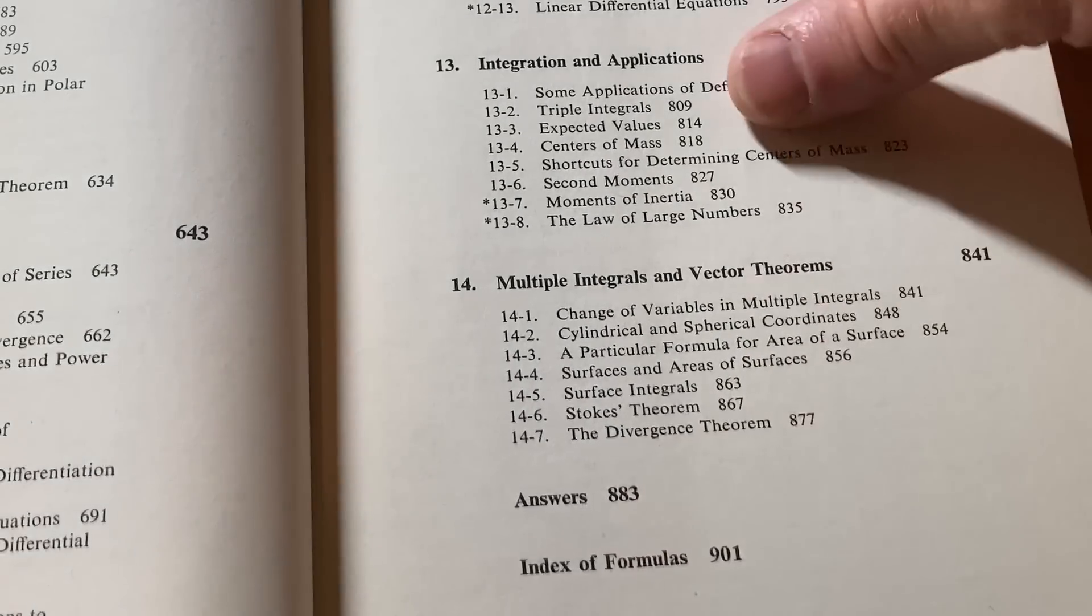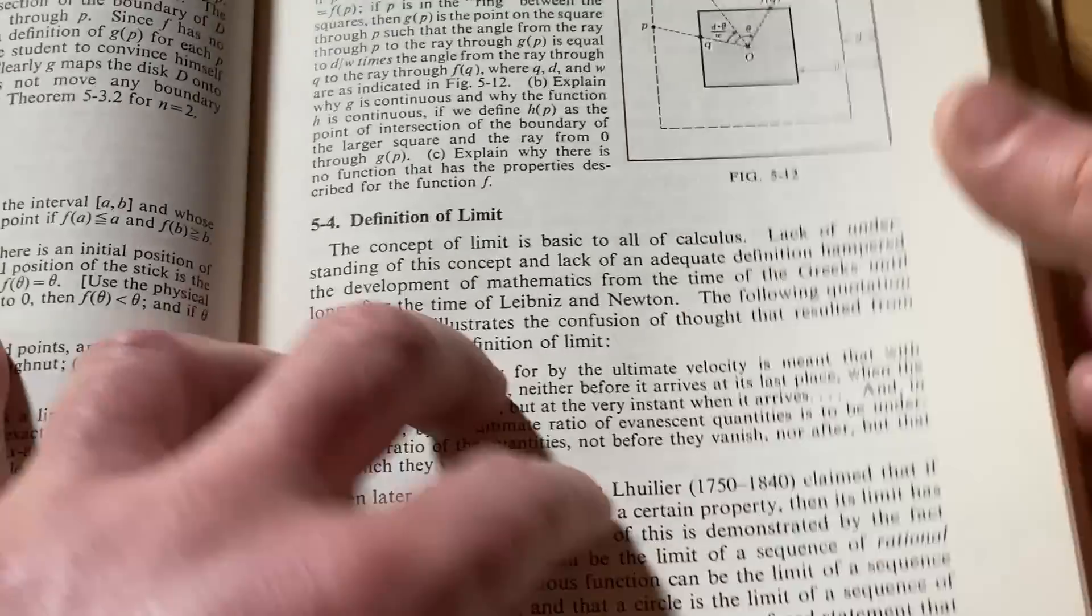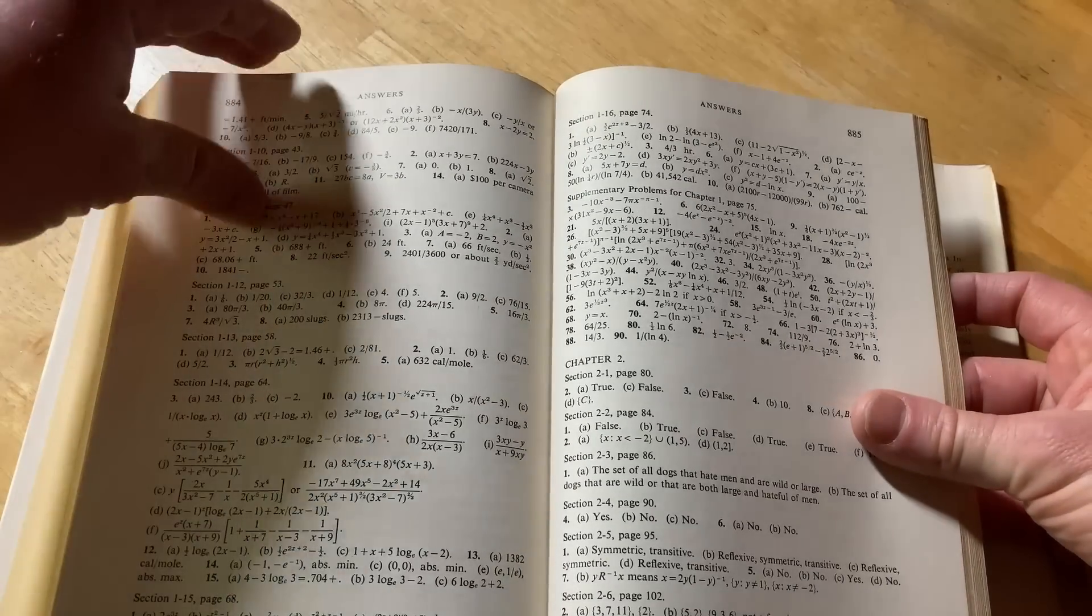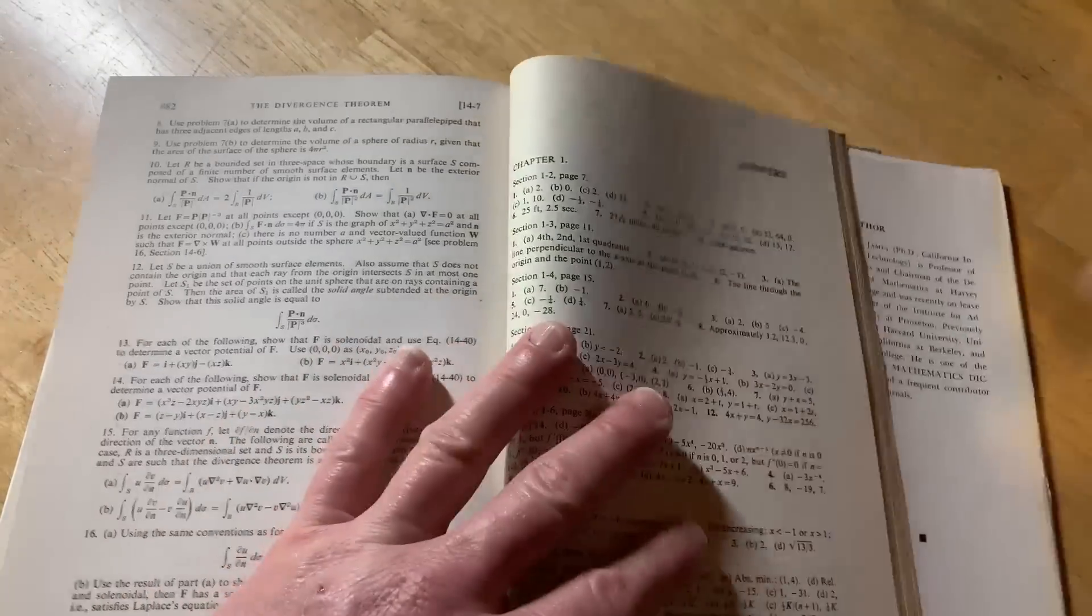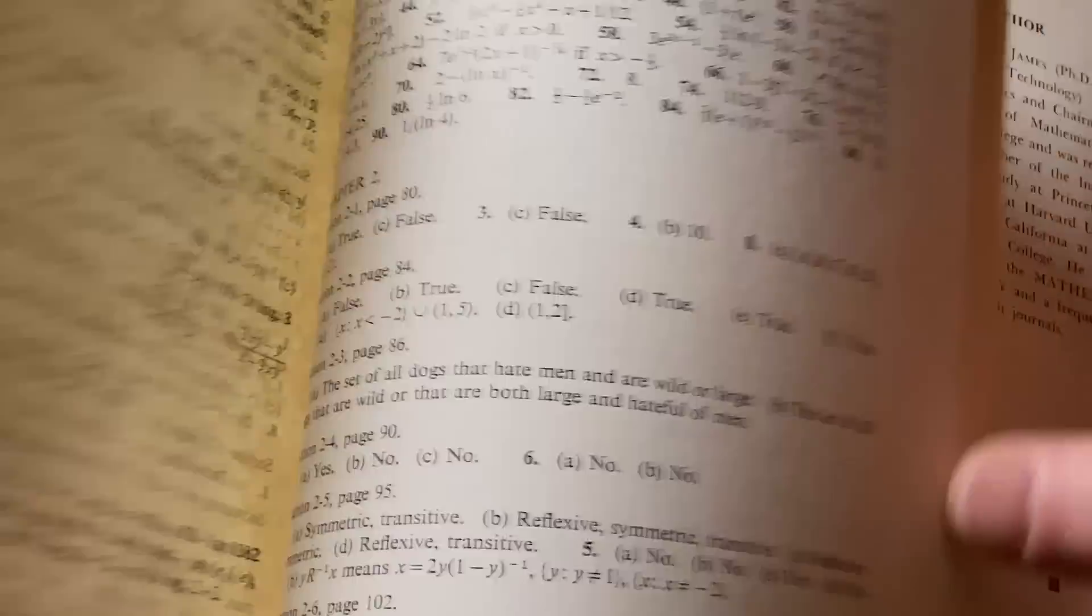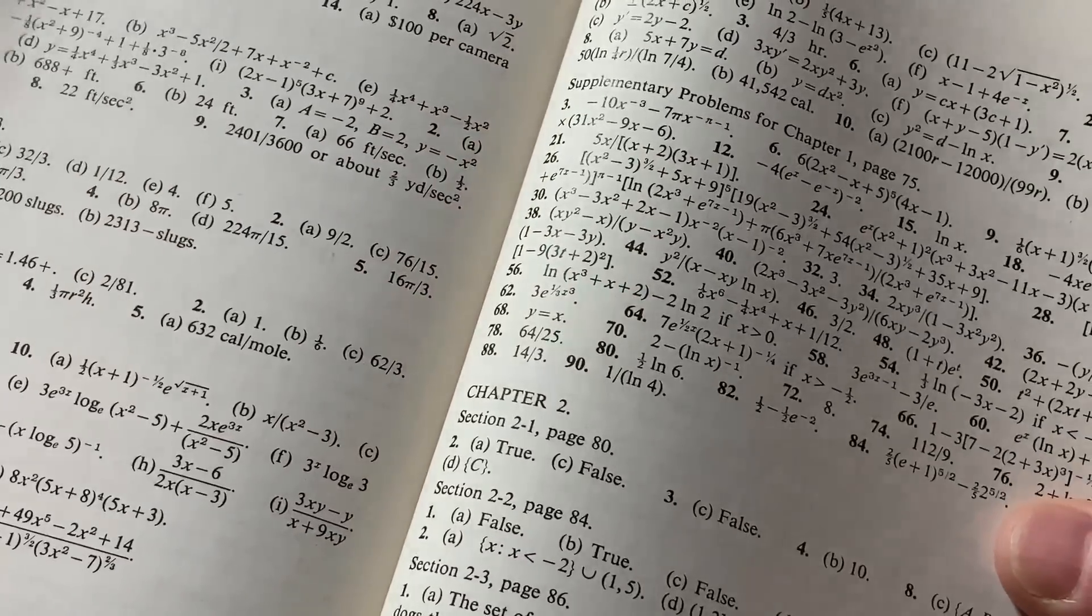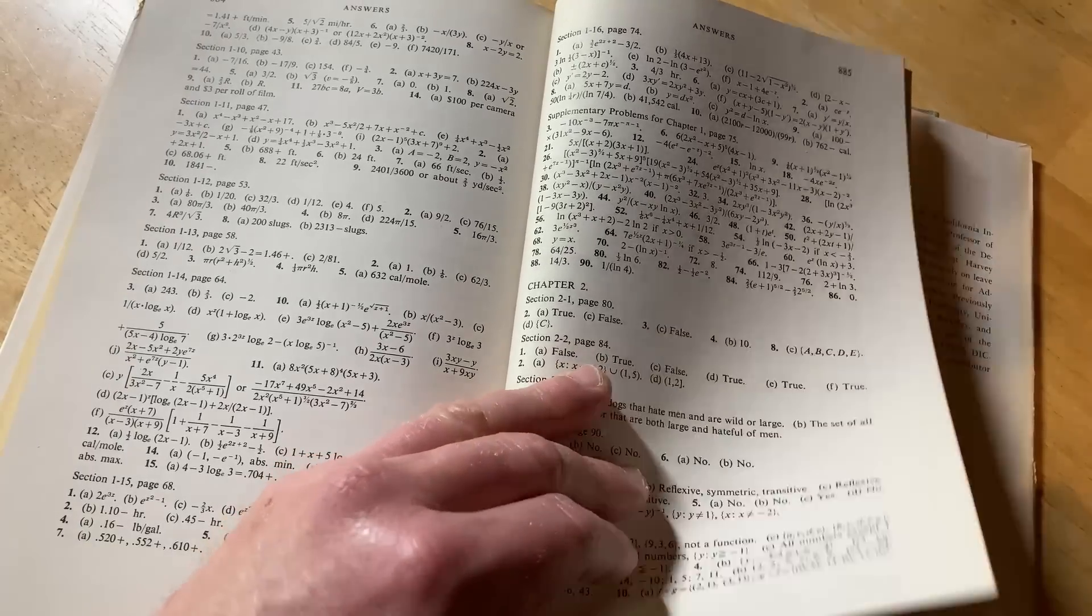And here you see it says answers. So the book actually does have answers. And from what I have seen from the exercises that I've looked at, it has answers to every single problem. Now, the only exception to that, that I have found so far is that sometimes some are omitted. So that could be because there are proofs or the problems are a little bit different, but you can see most of the time, it seems like it has answers to every problem. Also there are supplementary exercises. I would say answers to almost everything.